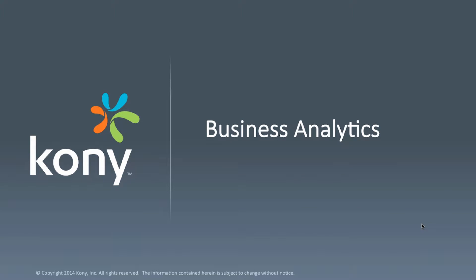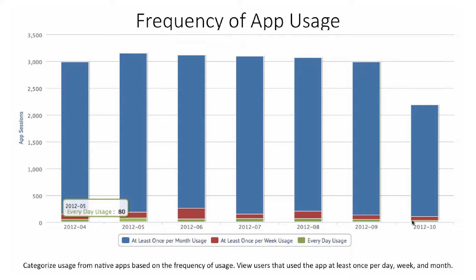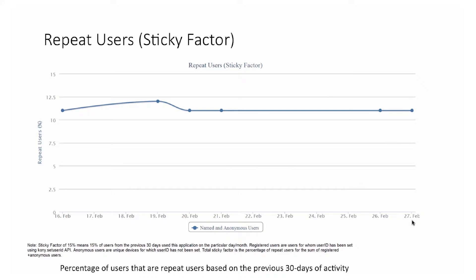From a business user perspective, we also have a report to find the frequency of application usage — whether the user is logging in every day, once a week, or once a month. This lets you classify the percentage of your users and see how many are frequent customers versus infrequent ones.